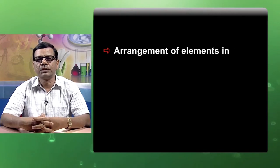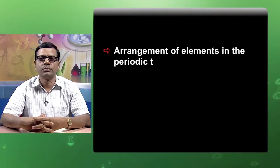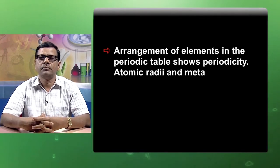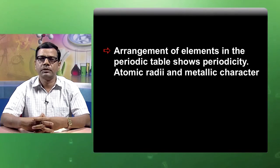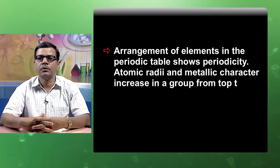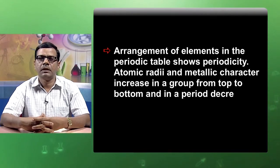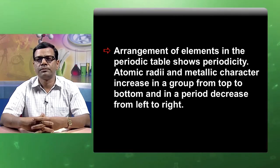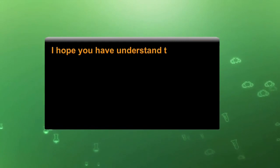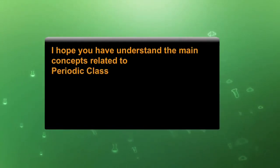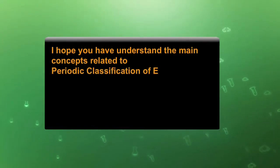The arrangement of elements in the periodic table shows periodicity: atomic radii and metallic character increase in a group from top to bottom, and decrease in a period from left to right. I hope you have understood the main concepts related to periodic classification of elements.